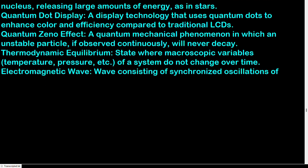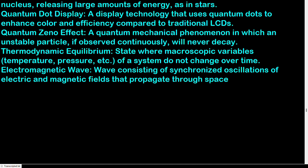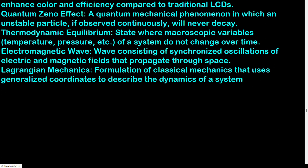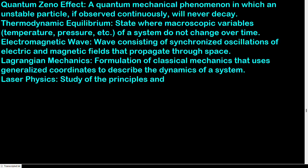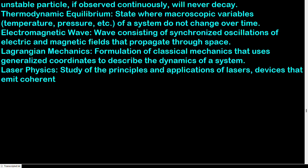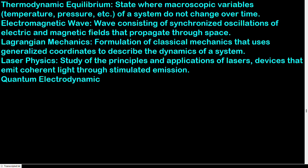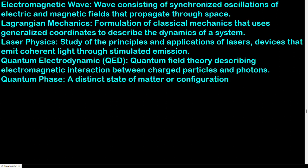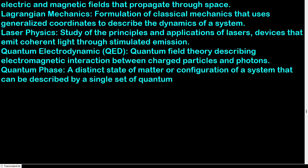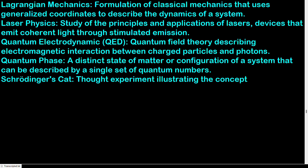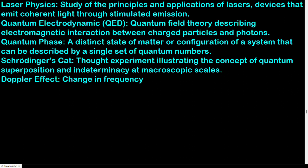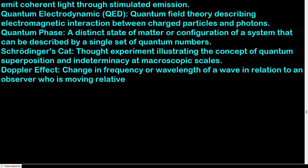Lagrangian mechanics: formulation of classical mechanics that uses generalized coordinates to describe the dynamics of a system. Laser physics: study of the principles and applications of lasers — devices that emit coherent light through stimulated emission. Quantum electrodynamics: quantum field theory describing electromagnetic interaction between charged particles and photons. Quantum phase: a distinct state of matter or configuration of a system described by a single set of quantum numbers. Schrödinger's cat: thought experiment illustrating the concept of quantum superposition and indeterminacy at macroscopic scales. Doppler effect: change in frequency or wavelength of a wave in relation to an observer moving relative to the wave source.